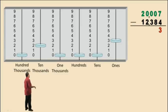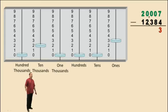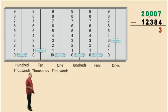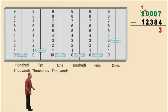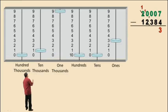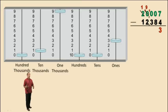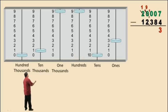Now in our tens column, we have 0 subtract 8. We can't do that, so we have to borrow from the hundreds. But we don't have any hundreds. So we have to borrow from the thousands. But we don't have any thousands. So we have to borrow from the ten-thousands. Notice our ten-thousands becomes 1, and now in the thousands we now have 10. Now we've got to borrow one of the thousands and put it into the hundreds — remember, 1,000 is equal to 10 hundreds. So notice our thousands will change to 9, and our hundreds change to 10. Now we have to borrow one of the hundreds and put it into the tens — remember, 1 hundred is equivalent to 10 tens. So when we borrow from the hundreds, notice it changes to 9, and we now have 10 tens. Let's go ahead and write that up in our calculation.